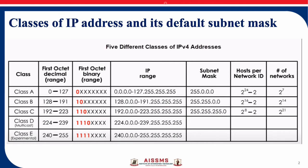For identifying the IP address class we have to check the first octet. If the class is A, the range must be 0 to 127. If the range is 128 to 191 it belongs to Class B. If the range is 192 to 223 it belongs to Class C, and so on. This is if you are checking in the decimal form.